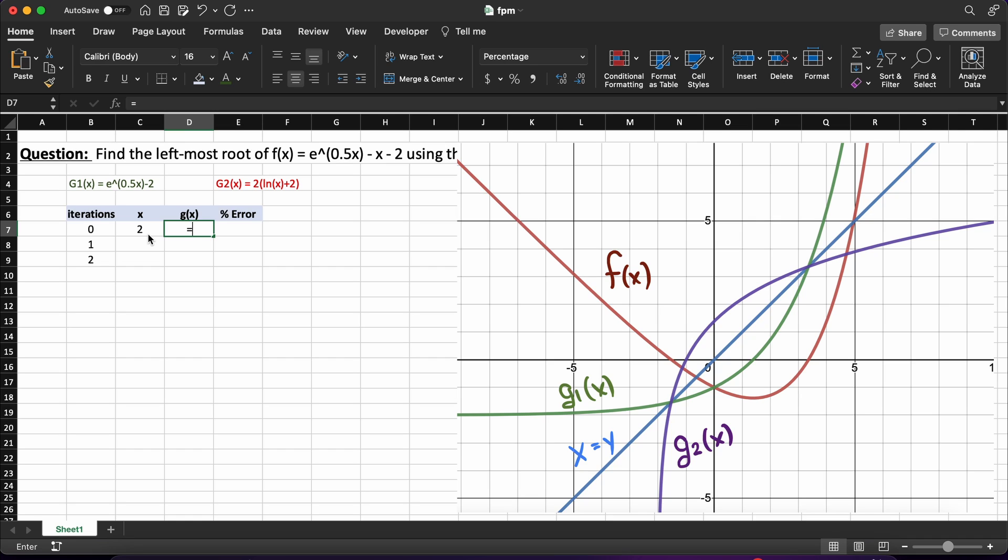Now, we need to enter our g of x function here, and anywhere we see our xn variable here, we will pick our current guess of x, which is the column to the left of it. So this is our first iteration complete.